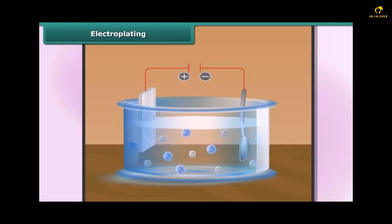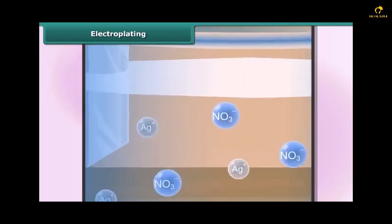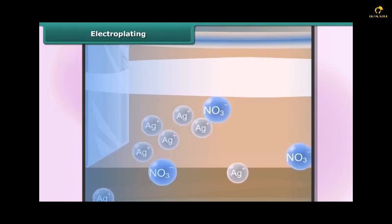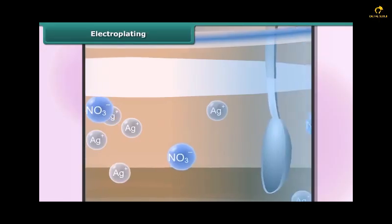The electrolyte is a solution of salt that contains the ion of the anode metal, for example silver nitrate. As soon as electric current starts flowing through the solution, electrons begin to escape from the silver anode.